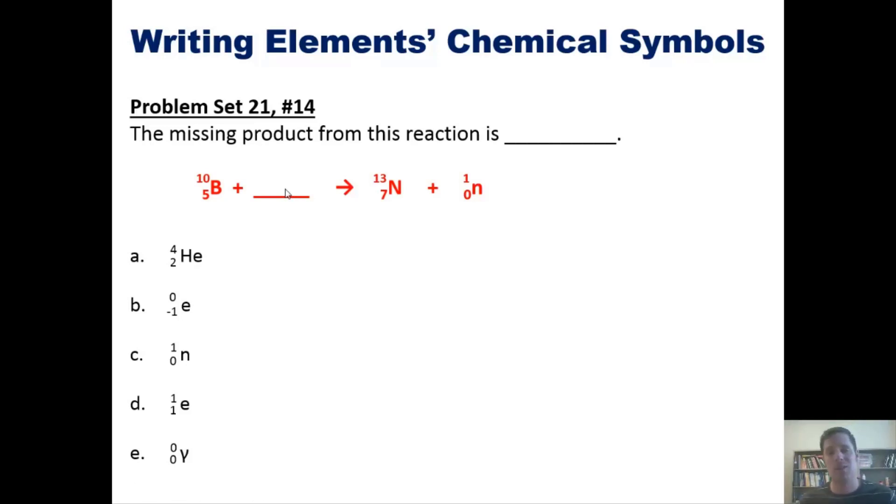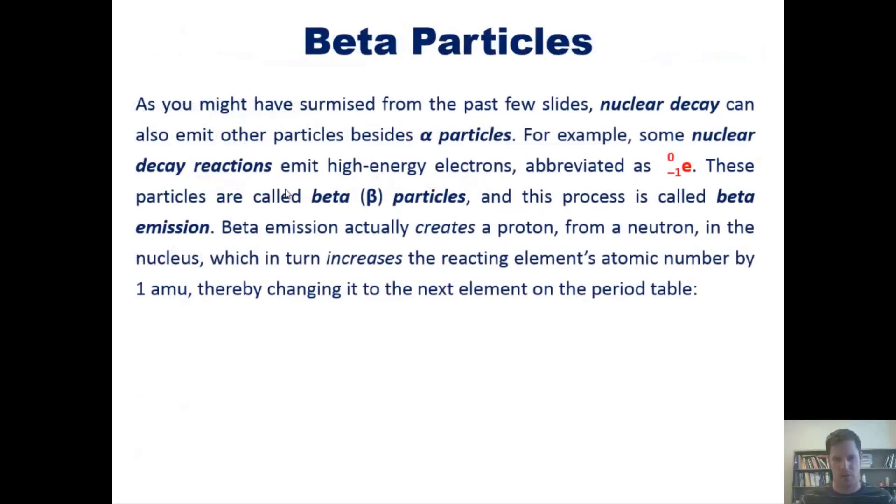We now turn to beta particles. Nuclear decay can emit other kinds of particles besides alpha particles. For example, some nuclear decay reactions emit high-energy electrons, abbreviated with a zero up top and negative one down bottom. These are called beta particles, and this process is called beta emission.